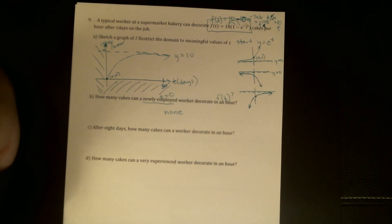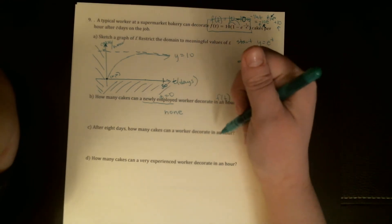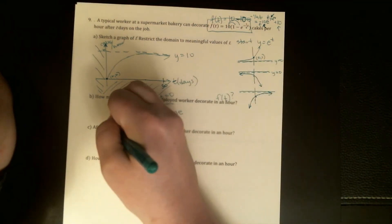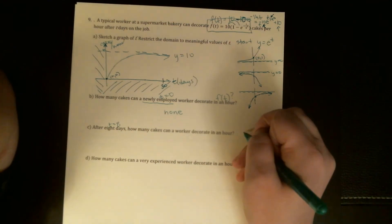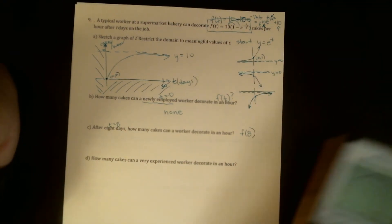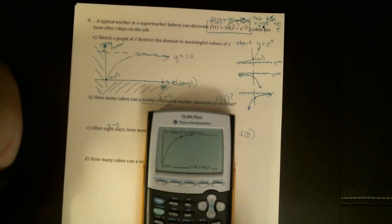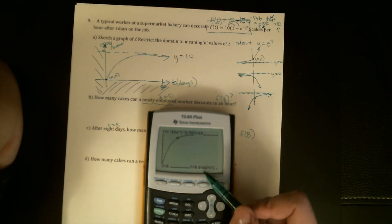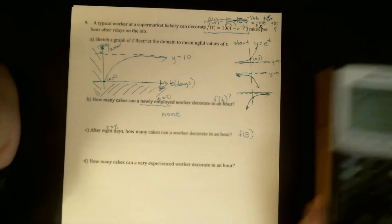Part C. After eight days, how many cakes can a worker decorate in an hour? So again, this is asking us for an f(t). And it's given us a t equals eight. So we're looking for f(8). And you can plug back into the equation. Or if you've gotten a graph up on your calculator, you can do what we were doing before, hit trace, and then type in your x value. And it will give you that approximate answer, which is exactly what I want. So about 8.65. It says right down here, 8.6466. So about 8.65.